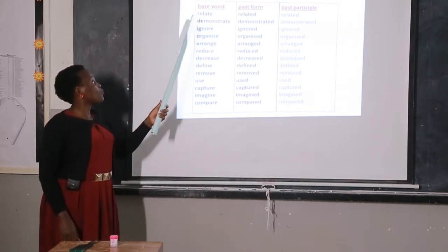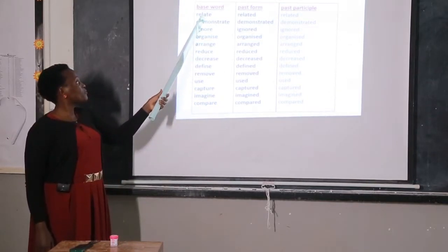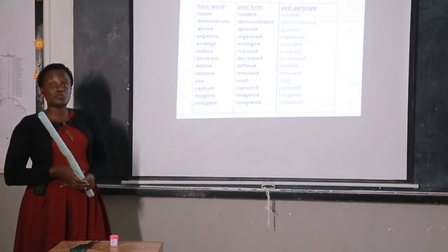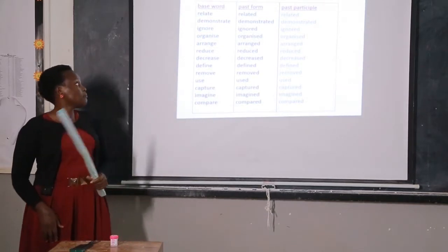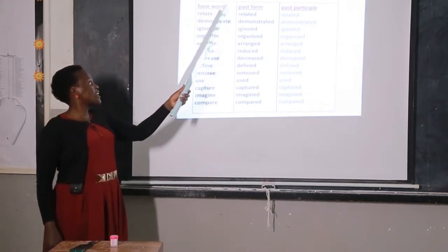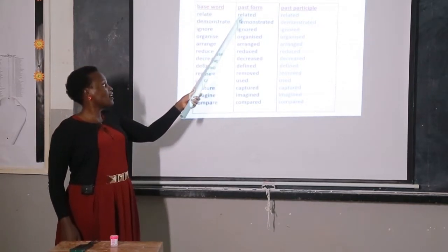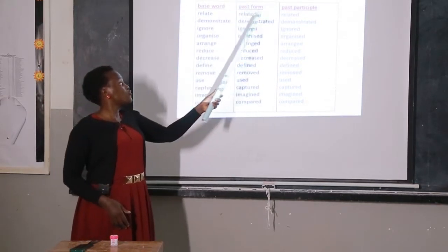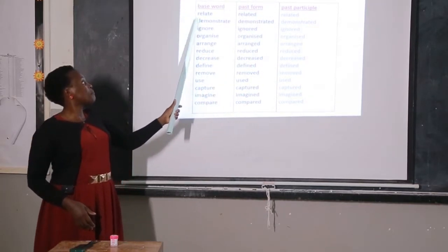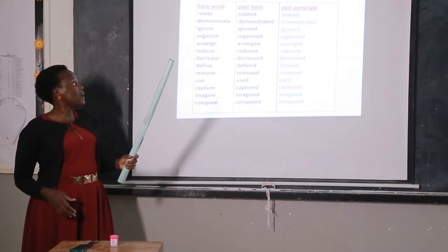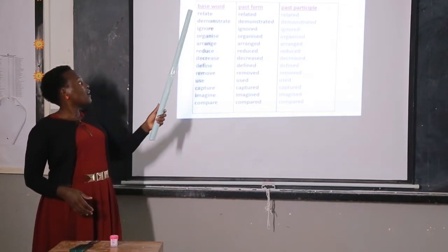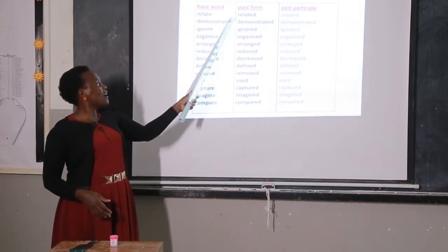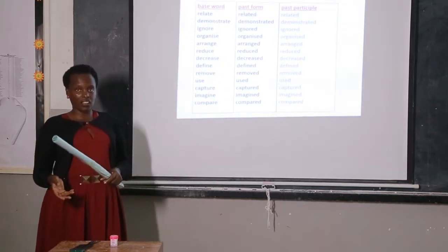We have the word 'relate.' In its past form, it becomes 'related.' In past participle, it also becomes 'related.' For example, we say: Tom related to John well.